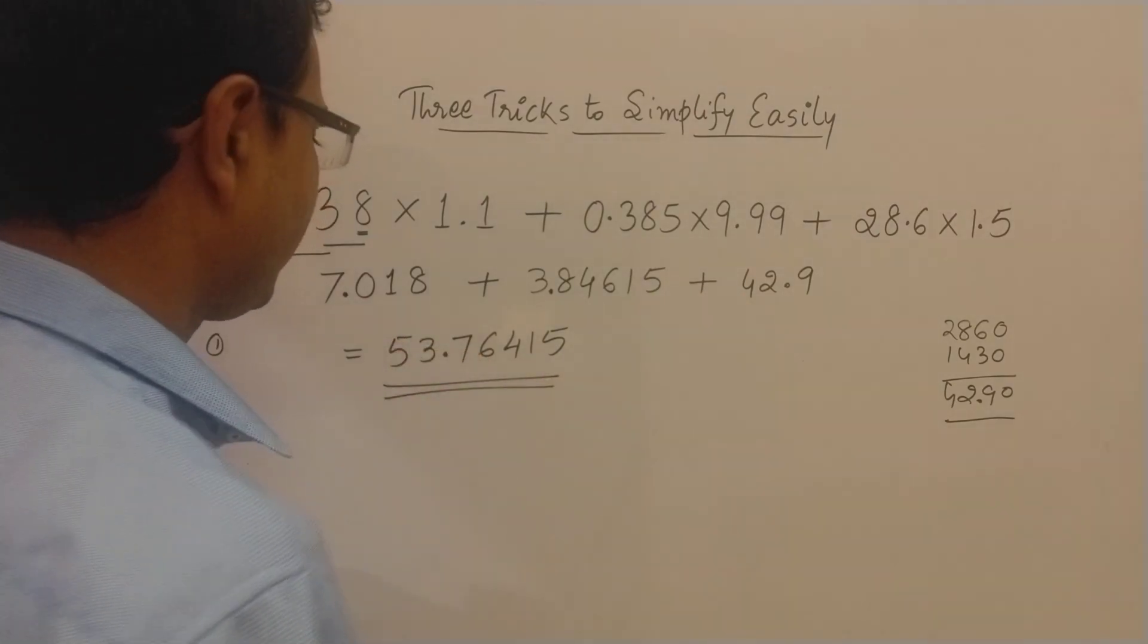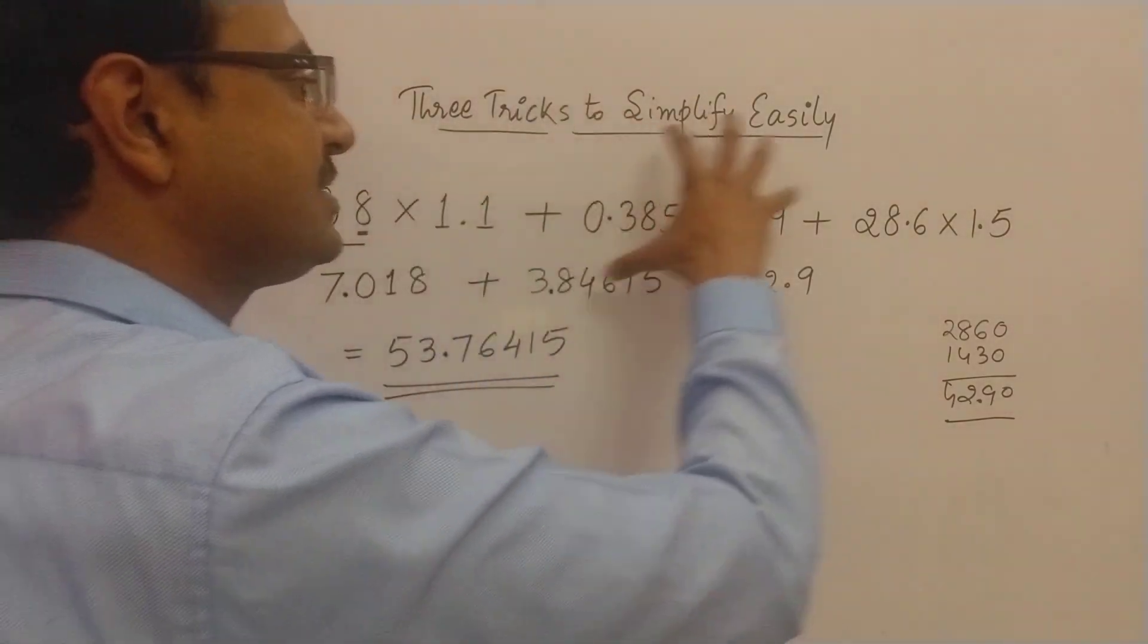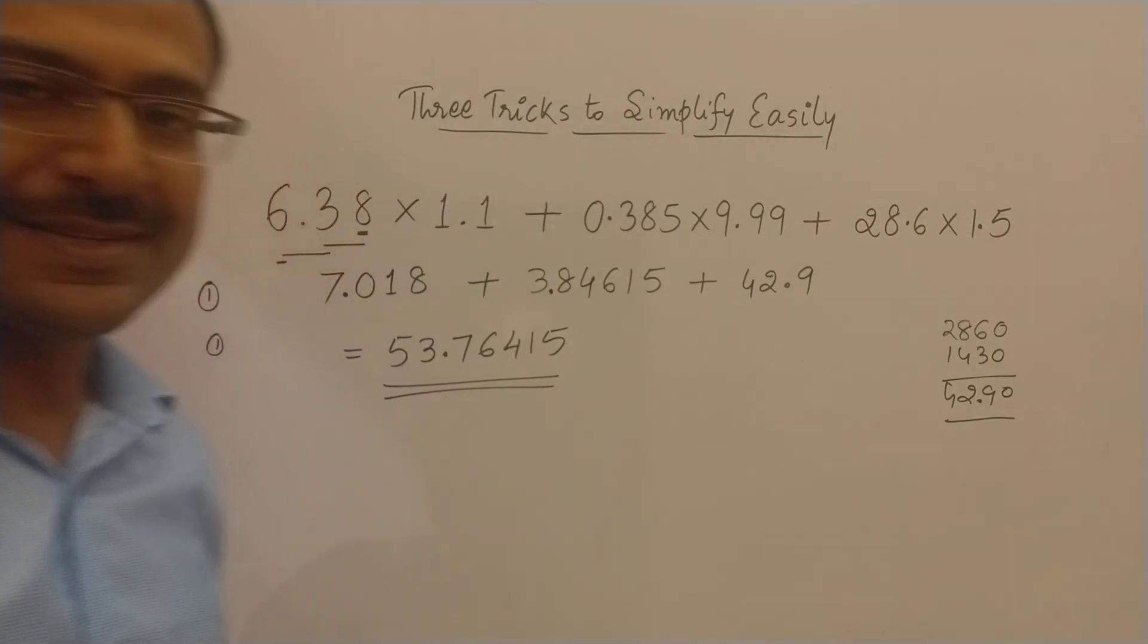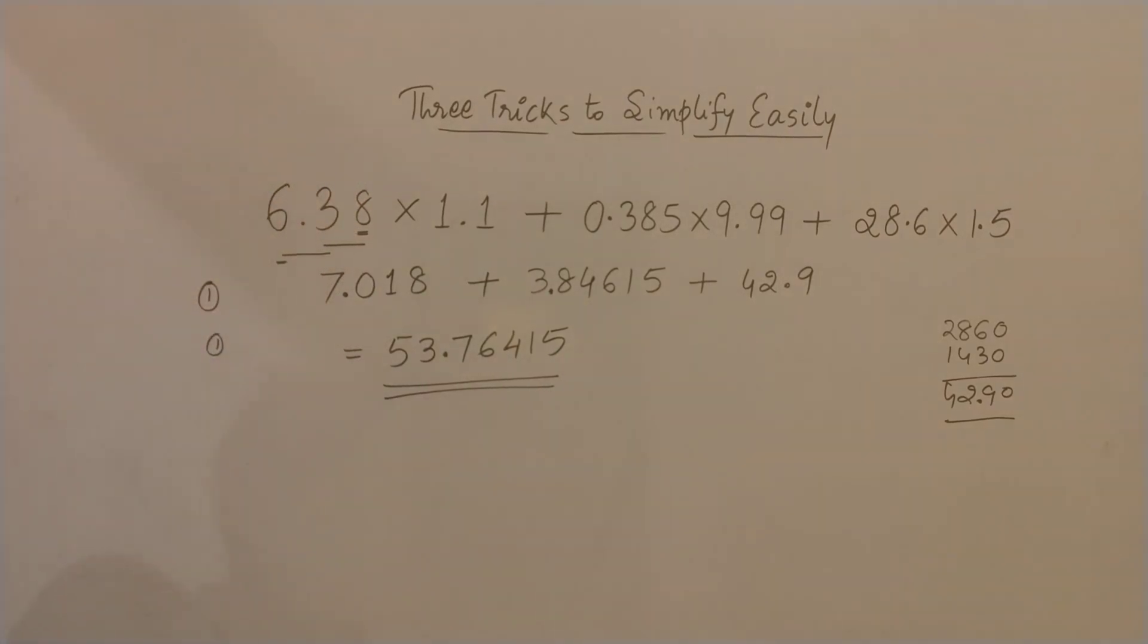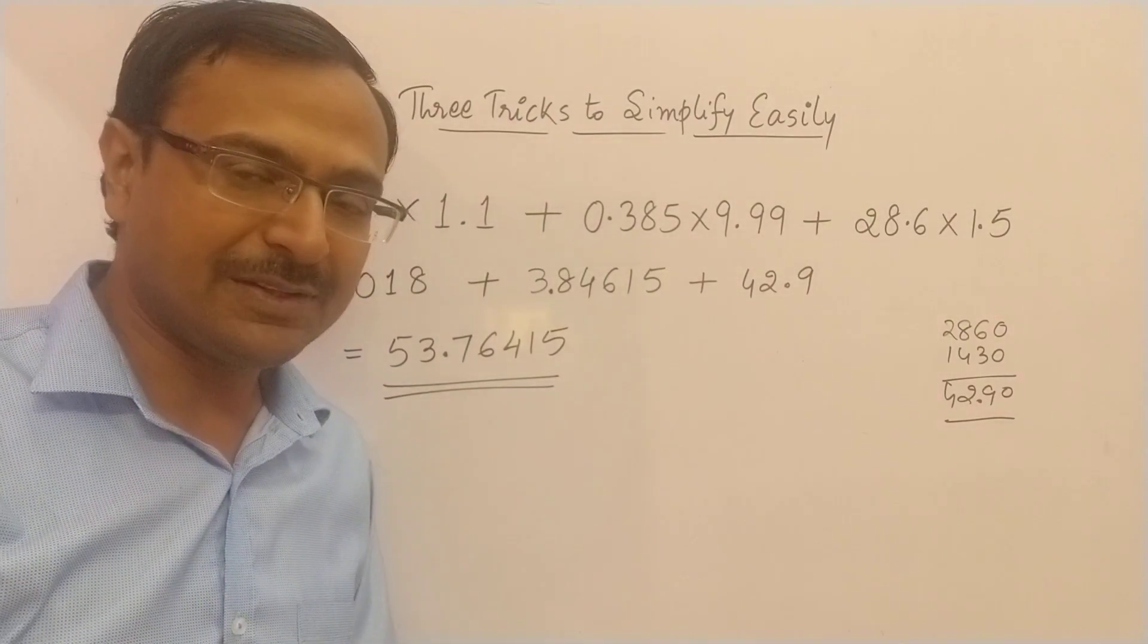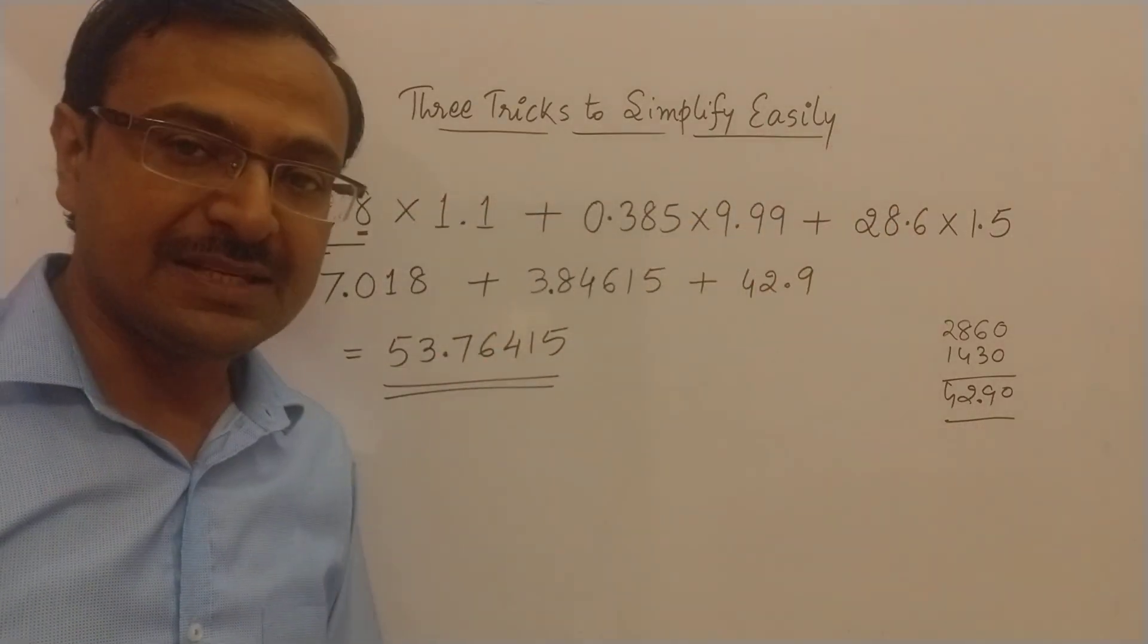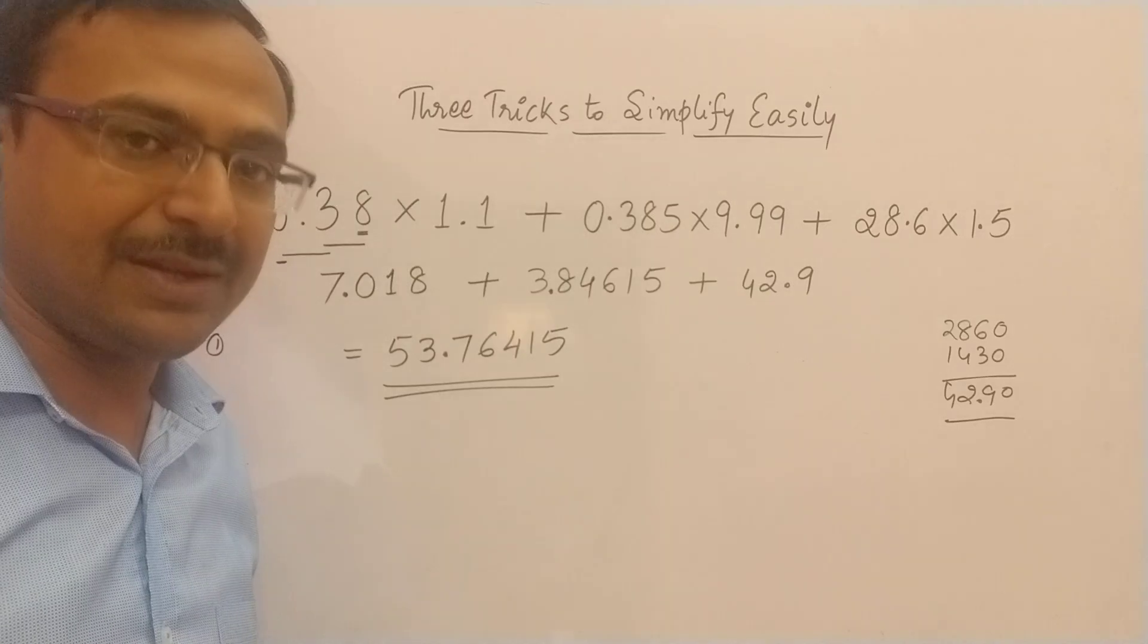So let's see. 53.76415 is the result of multiplying these three individual parts and then adding this. So I am sure you can check it through calculator whether you are getting the answer correct or not. And these are the methods you need to know if you want to crack these type of simplification problems easily by saving a lot of time in exams.